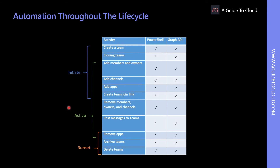You can configure and manage the Teams lifecycle through the Teams admin center, the Office 365 admin center, and the Azure AD admin center as well. If you wish to automate specific management tasks throughout the Teams lifecycle, you can do so by using PowerShell and Graph API automation tools. This diagram shows all the types of automation you can enable during different lifecycle stages within Teams.